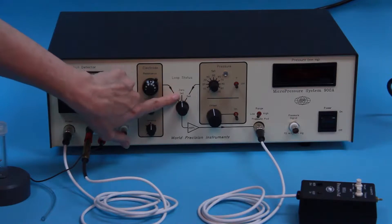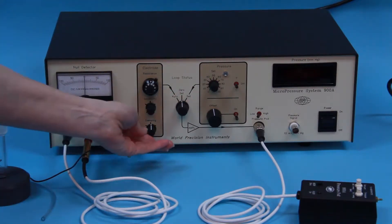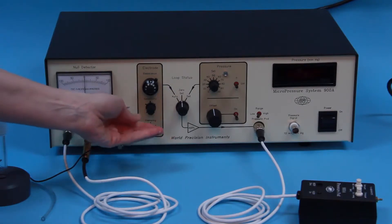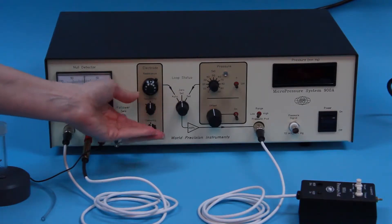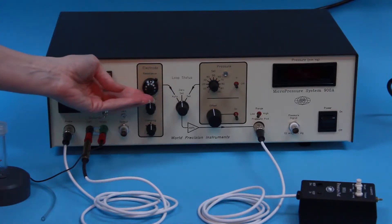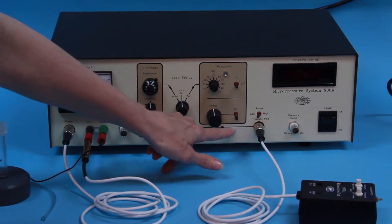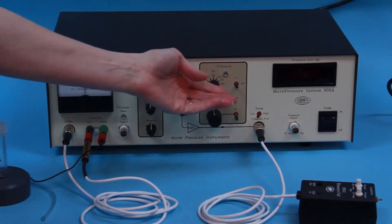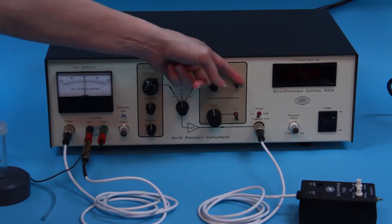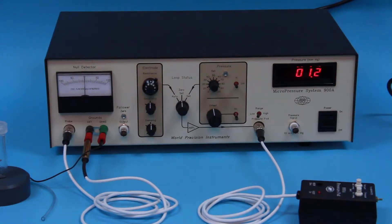This maintains a pressure of zero millimeters of mercury in the pressure chamber. Set the damping and sensitivity controls to the 12 o'clock position. Set the electrode resistance dial fully counterclockwise to zero. Set the offset switch to the off position. Set the pressure switch to off position. Then turn on the power and let the system warm up for 15 minutes.